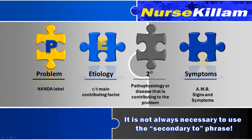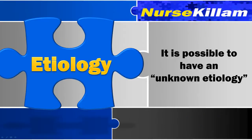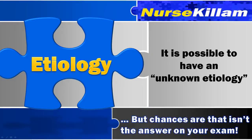'Secondary to' is used to make a statement more precise and clarify the etiology. Use secondary to in order to specify a pathophysiology or disease that is contributing to the problem. Keep in mind that it is not always necessary to use the secondary to phrase — you want to keep your diagnoses as clear and concise as possible. If a client has the defining characteristics of a nursing diagnosis but you do not know the cause or contributing factors, you can say there is an unknown etiology. Make sure you have completed your assessment and use critical thinking to be sure you are not jumping to conclusions when making your diagnosis. Writing unknown etiology is not a trick to get your homework done faster.